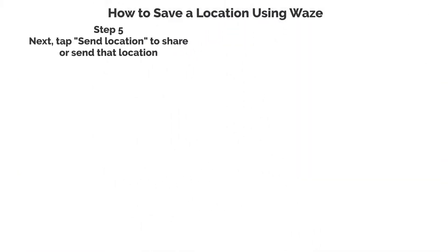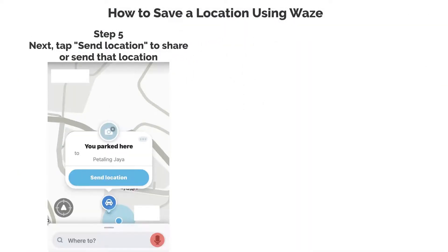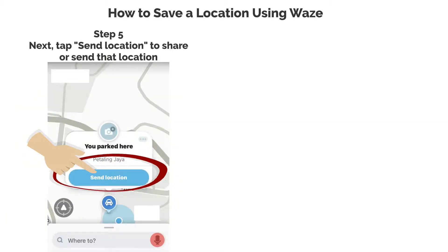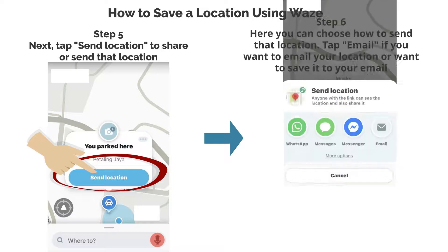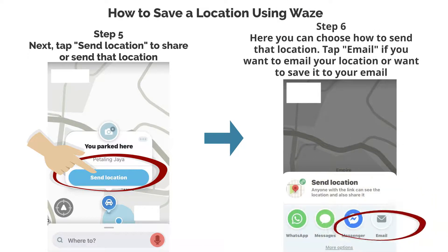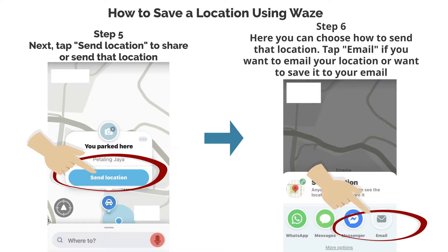Step 5. Next, tap Send Location to share or send that location. Step 6. Here you can choose how to send that location. Tap Email if you want to email your location or want to save it to your email.